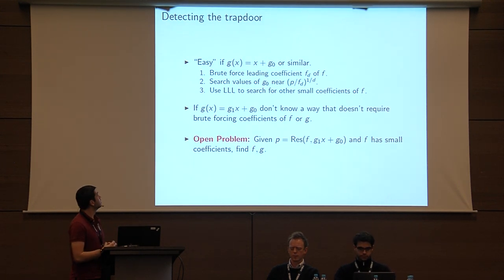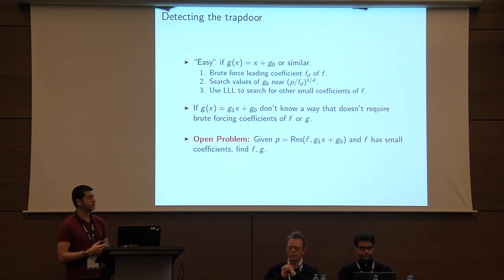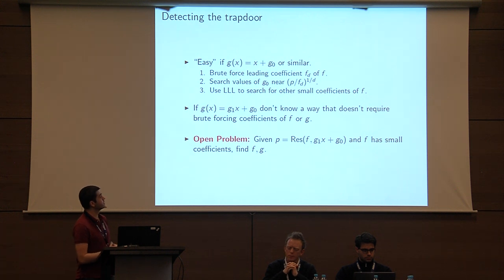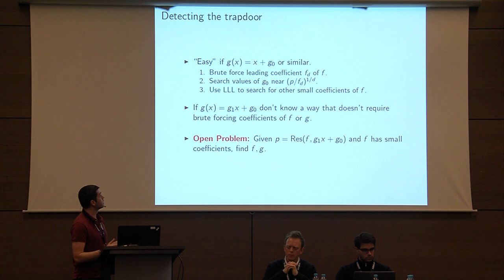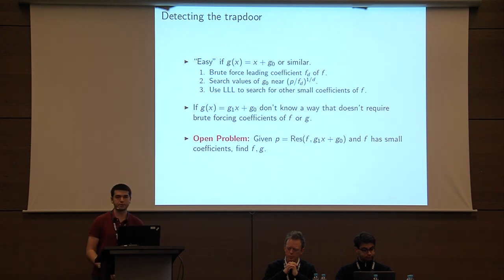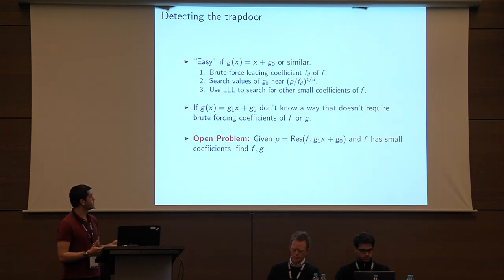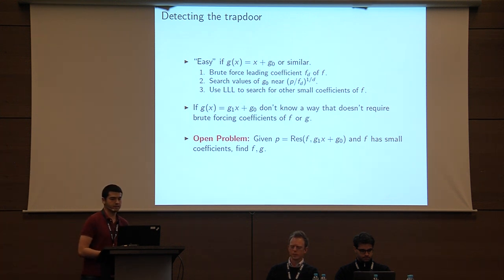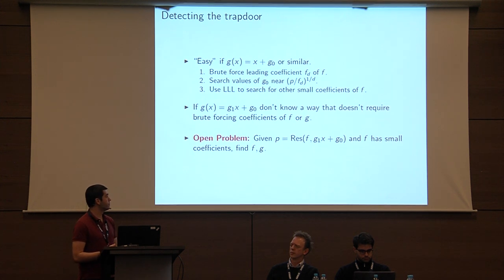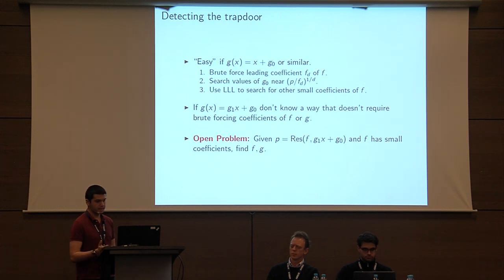So how would one of these primes be detectable? It would certainly be detectable if your linear polynomial is monic — if the coefficient in front of X is 1 — because the upper bits of the resulting prime would be a direct result of the coefficient G0 and the leading small coefficients in F. You could brute force over all possible values for the leading coefficient of F and solve for G0. However, if the polynomial is not monic and there's some large-ish G1 used to construct this, there's no known way to uncover the trapdoor. Given some prime, it's hard to find a pair of polynomials with small coefficients even if such a pair exists.